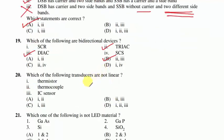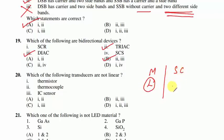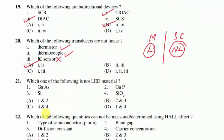Question 20 is based on transducers — which one is not linear? Metals follow a highly linear characteristic; semiconductors are non-linear. Thermistor and thermocouple are non-linear compared to IC sensors — option A follows.